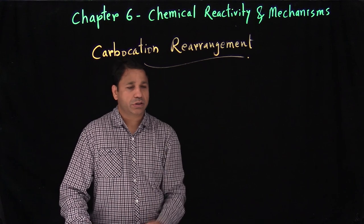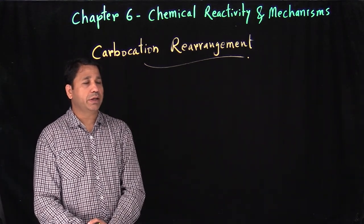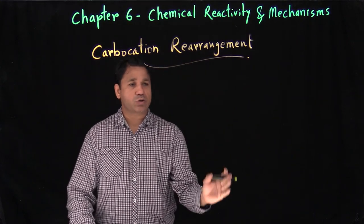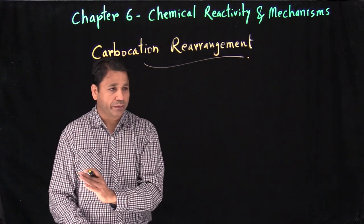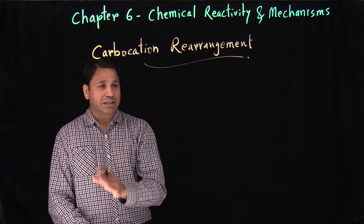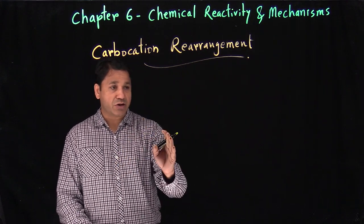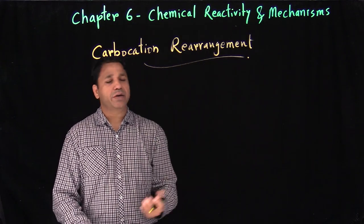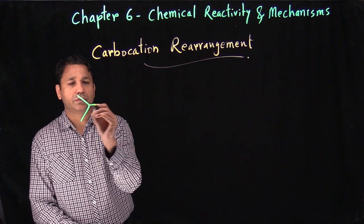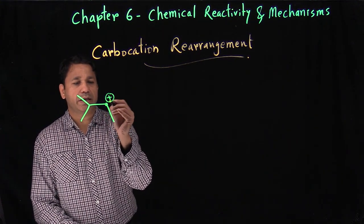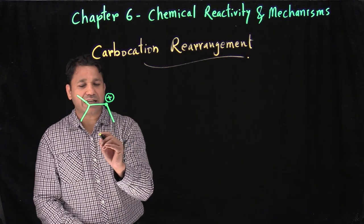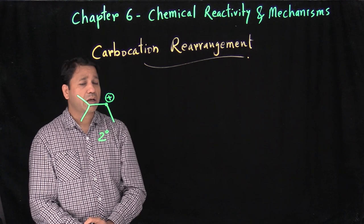Carbocation rearrangement: there are two types of rearrangements a carbocation can undergo. The meaning of rearrangement is that the carbocation is trying to shift from one carbon to another, driven by stability — it's trying to become more stable. For example, if we have a secondary carbocation, it will try to become tertiary. Secondary will not go to primary because that would make it less stable.